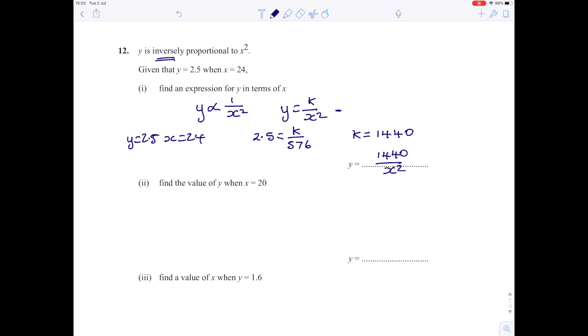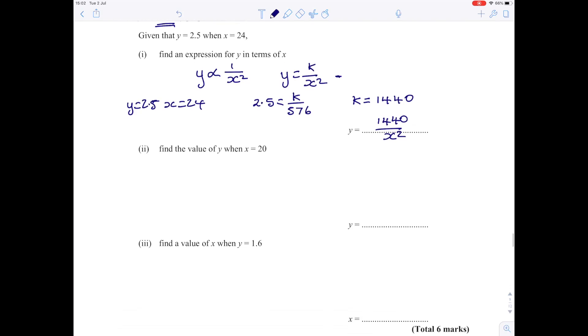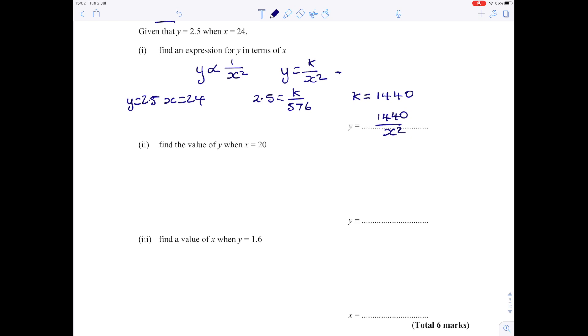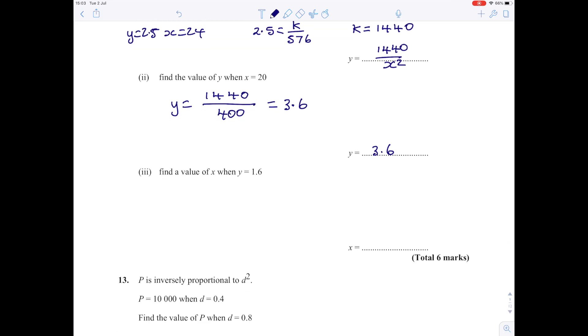To find y when x equals 20, substitute 20 in: y is 1440 over 20 squared, which is 400. 1440 divided by 400 is 3.6. So when x is 20, y is 3.6.